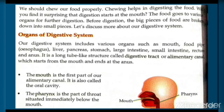The mouth is the first part of our alimentary canal. It is also called the oral cavity. The pharynx is the part of the throat situated immediately below the mouth.